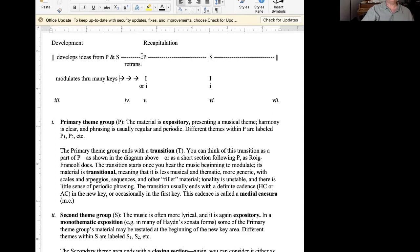This corresponds to the rounding off section of a rounded binary form. We get the primary theme group in the original key, complete with a transition which seems to modulate, but which in fact leads back to a half cadence or another strong cadence in the main key. So the transition in the recapitulation is very interesting, at least it is to me, because the composer goes through the motions of being about to modulate, but in fact doesn't leave the original key.